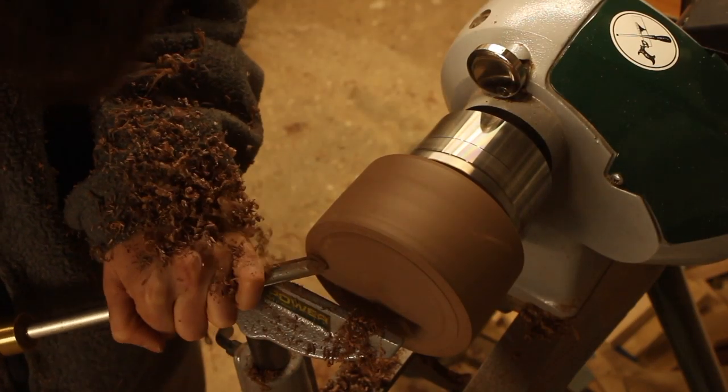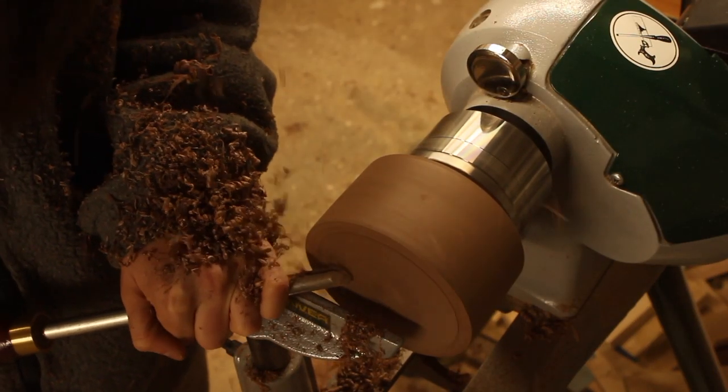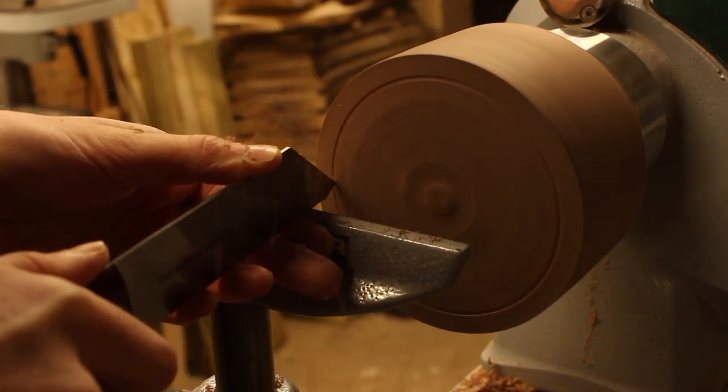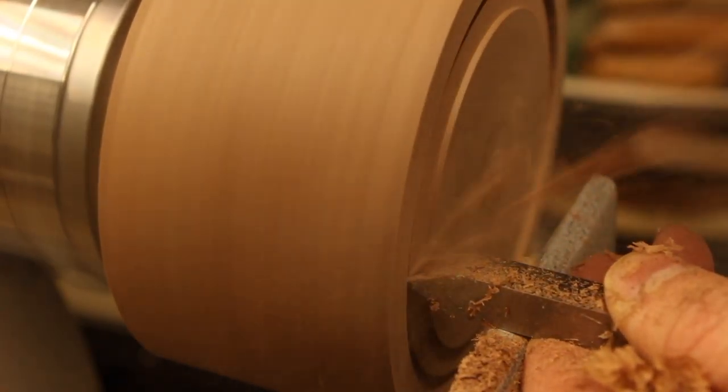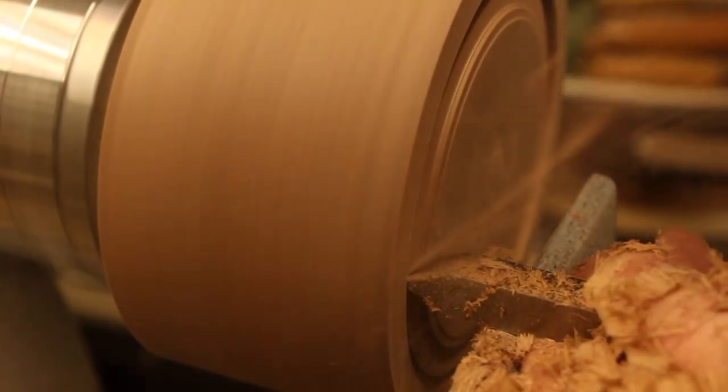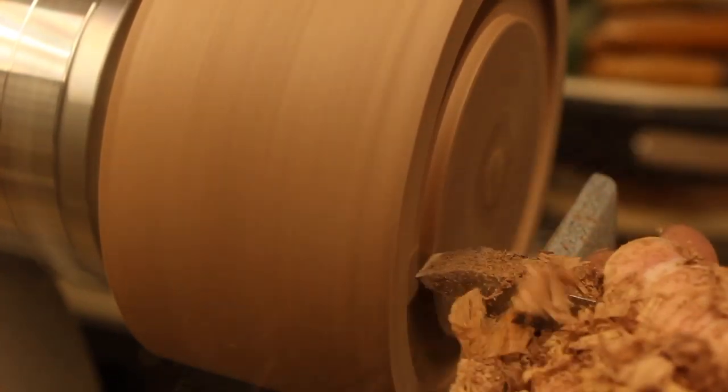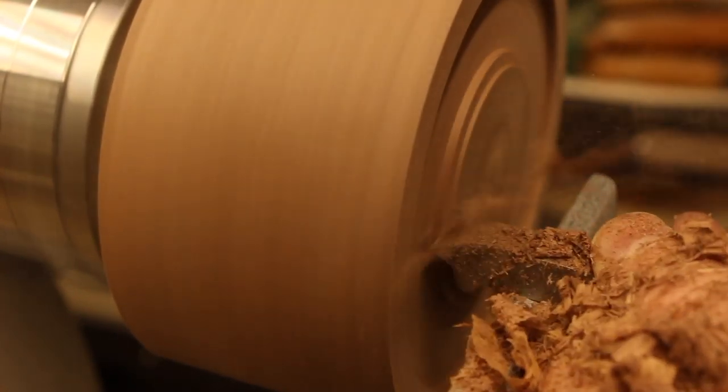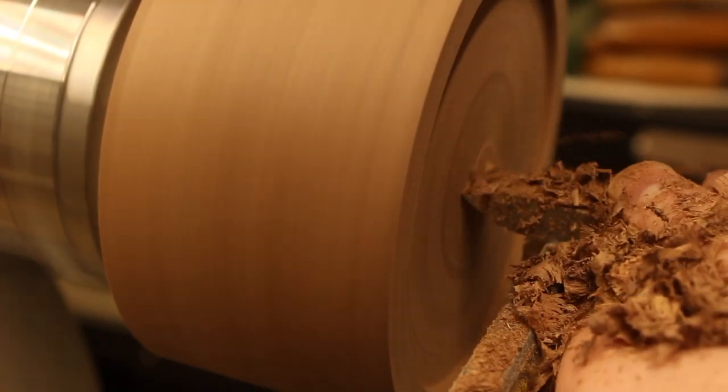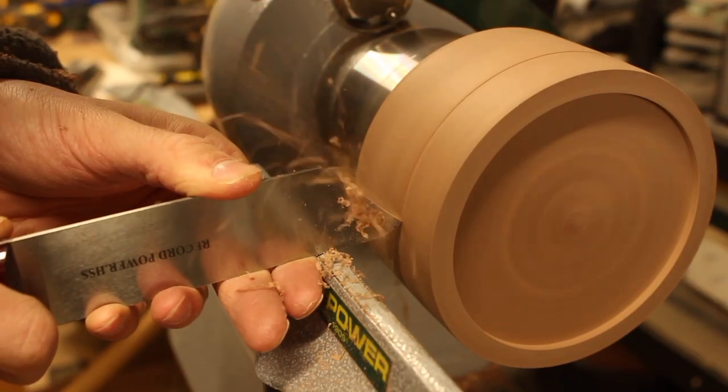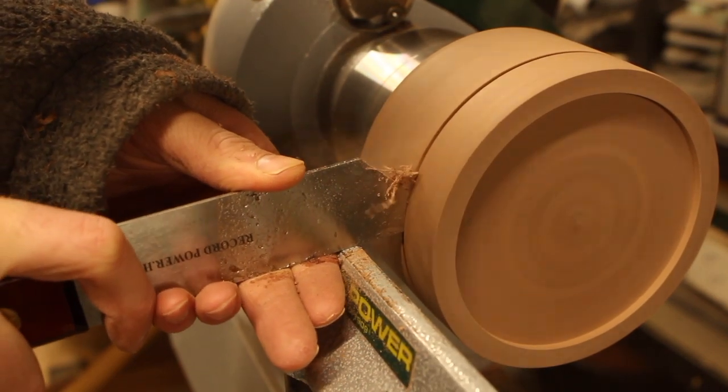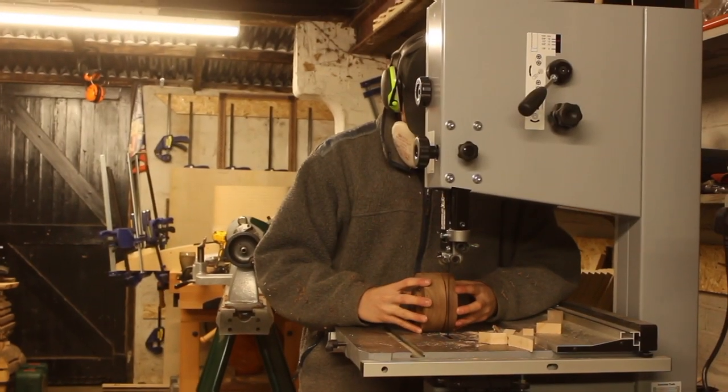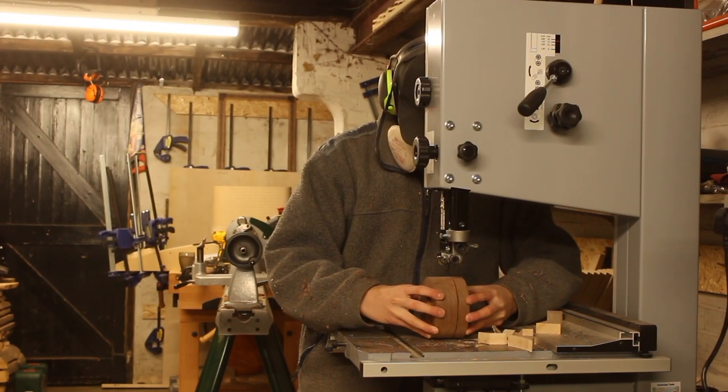Before I started to hollow out the inside of the box, I wanted to create the groove in the lid for the inlay bird's eye maple disc. I just used a parting tool to go all the way along, going down about five millimeters. I'm using a very thin parting tool which heats up very quickly, so I kept dabbing it in water to cool it down, then I finished off the cut on the bandsaw.